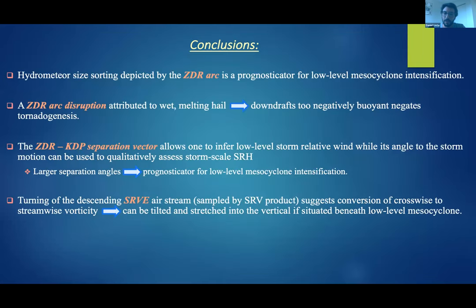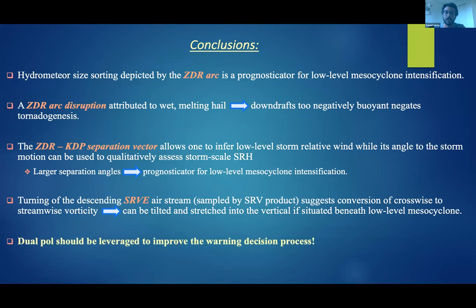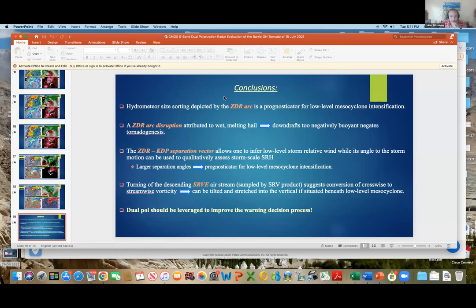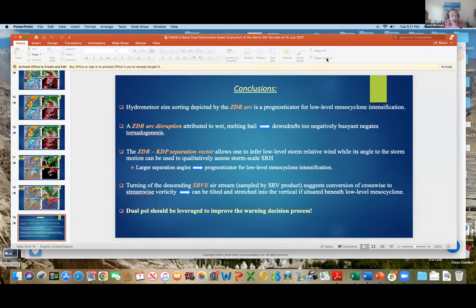To wrap up: there's a lot to tornado genesis, but results leveraging these dual-pol techniques are promising for this case in improving tornado warning lead times, enhancing forecaster confidence in the warning decision-making process, and potentially discriminating between tornadic and non-tornadic storms.